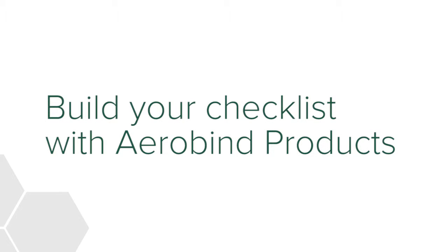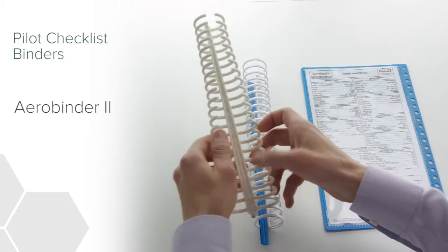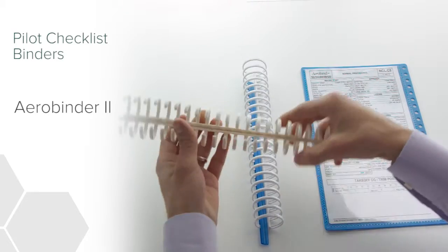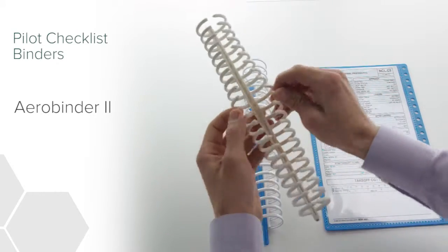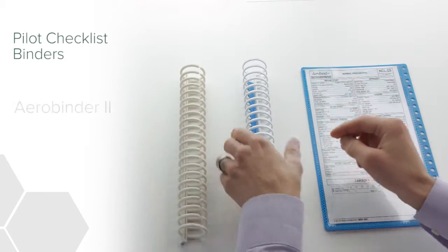Aerobind now offers a new and improved line of Airbus compatible pilot checklist supplies, including our Aerobinder 2 22 ring binder. The Aerobinder 2 features a clasping ring mechanism that makes revisions a snap.